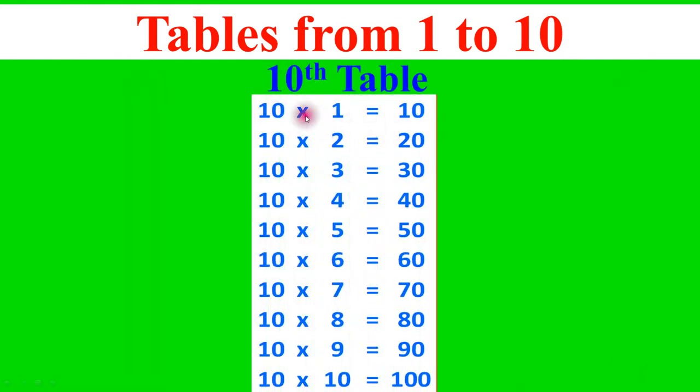10th table: 10 times 1 equals 10, 10 times 2 equals 20, 10 times 3 equals 30, 10 times 4 equals 40, 10 times 5 equals 50, 10 times 6 equals 60, 10 times 7 equals 70, 10 times 8 equals 80, 10 times 9 equals 90, 10 times 10 equals 100.